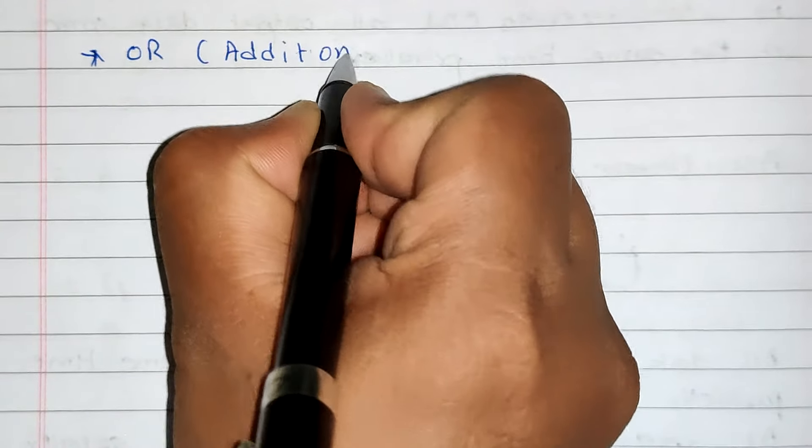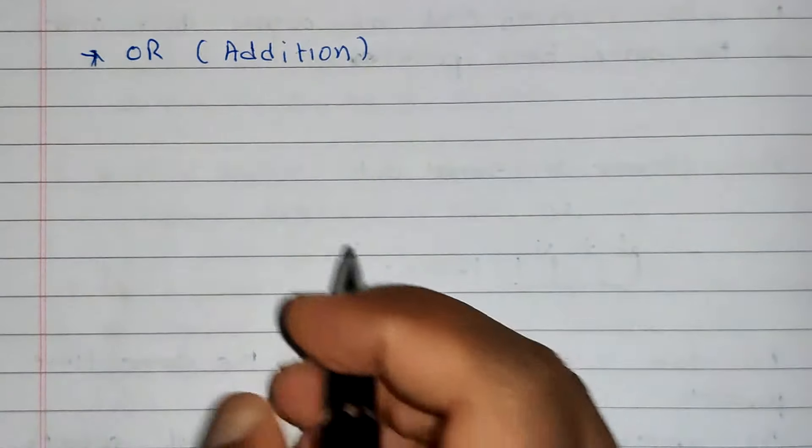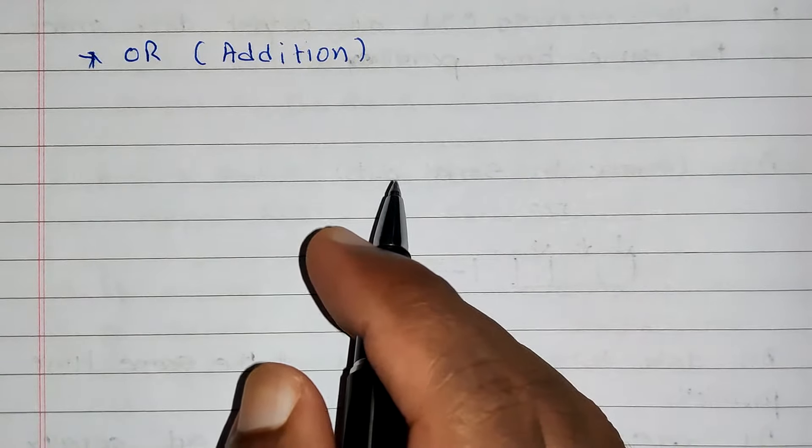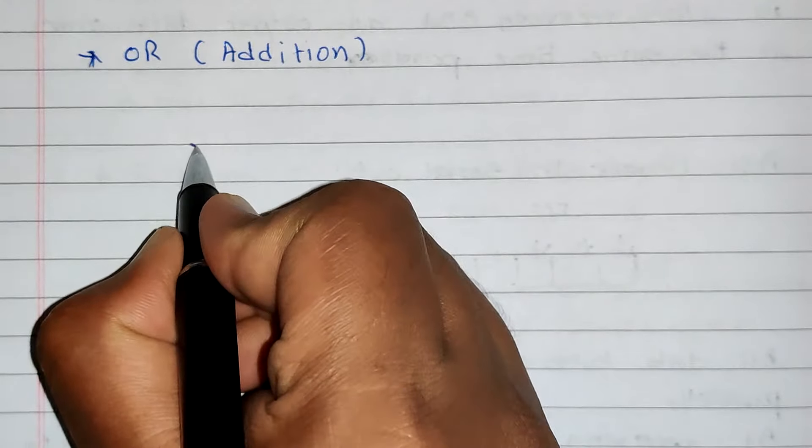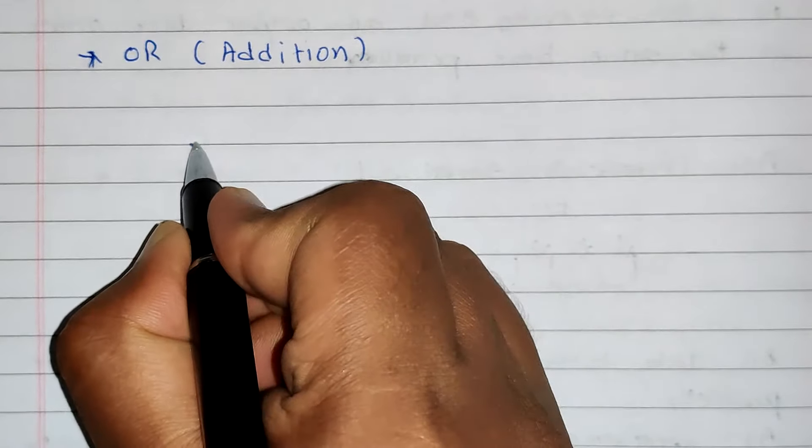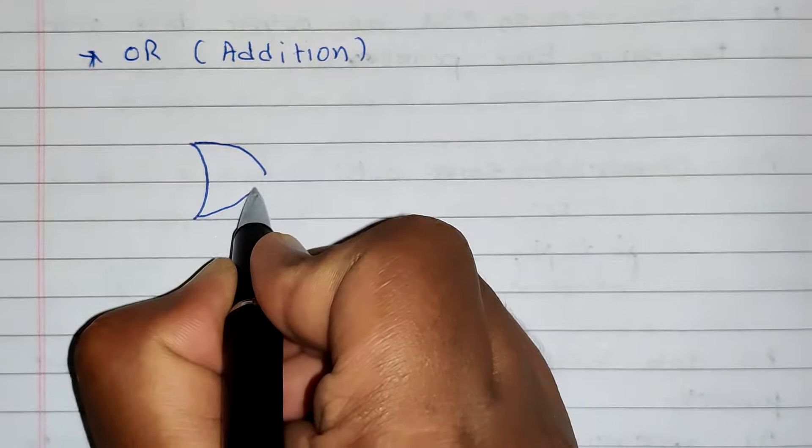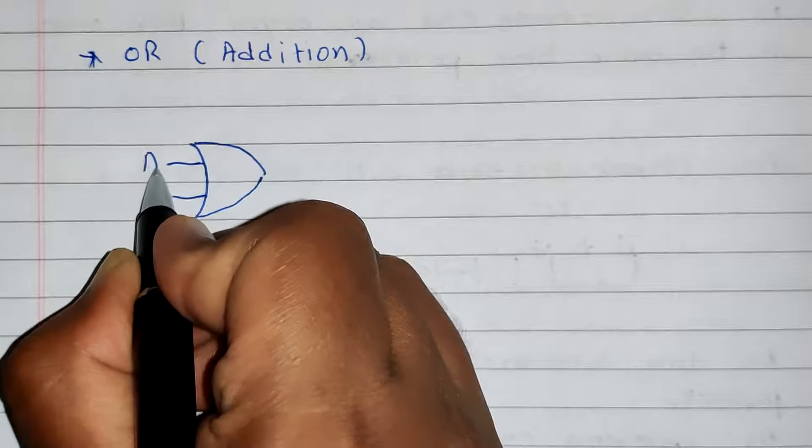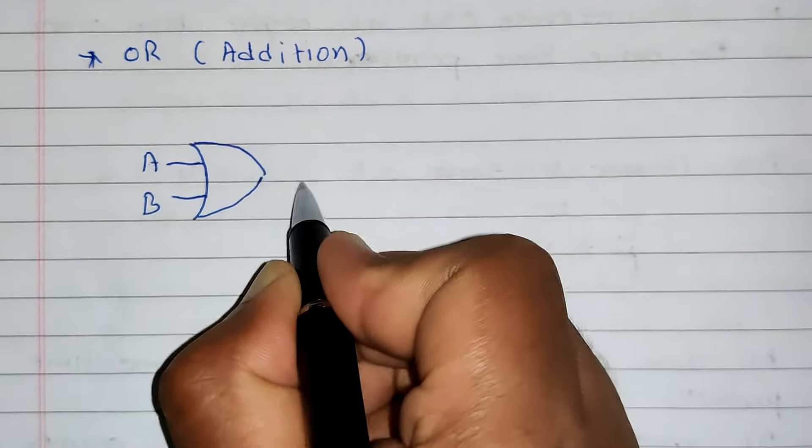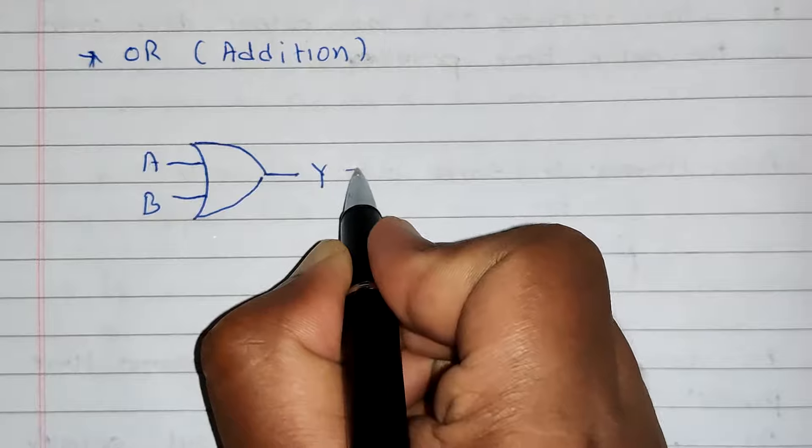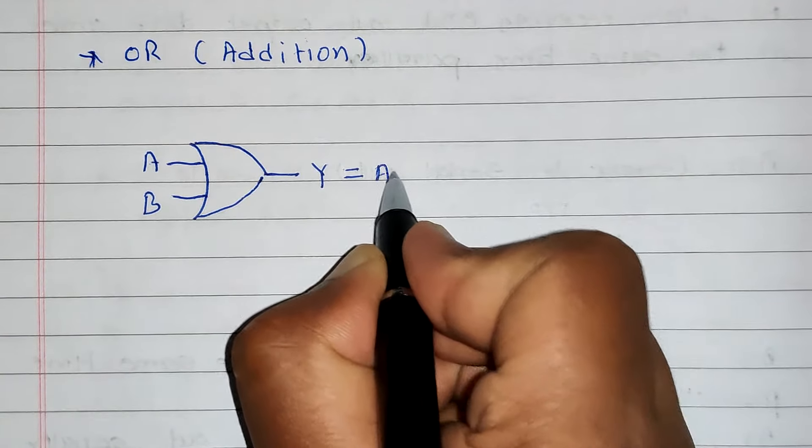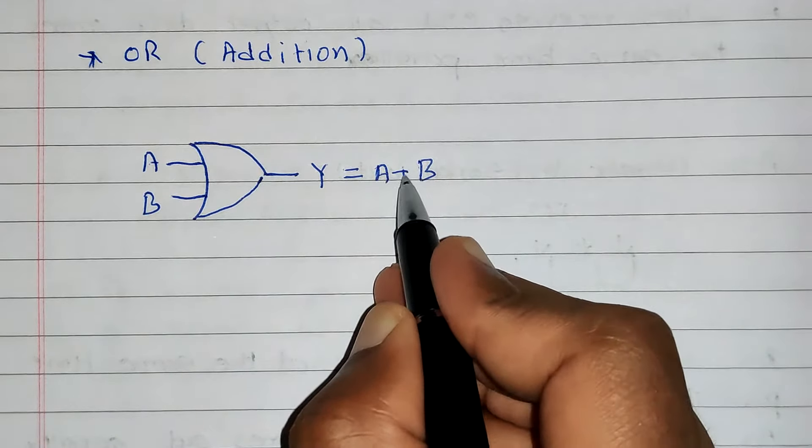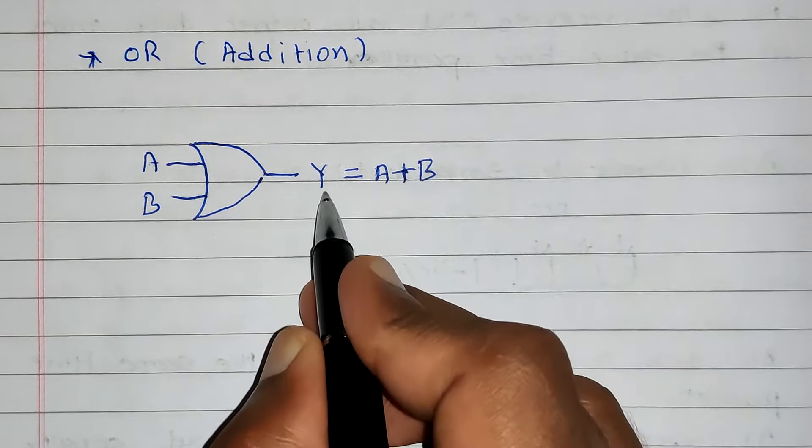Whatever input we provide, addition of that binary input will be provided towards the output. OR gate symbol is very simple. OR gate has, let's say, two inputs A and B, and output is denoted by capital Y. This output will be A plus B. So addition of inputs will be provided by OR gate.